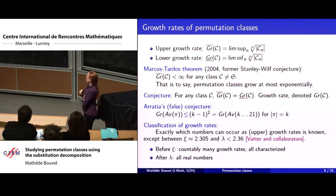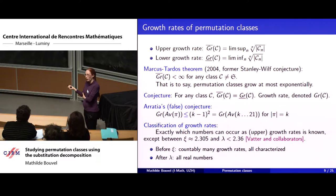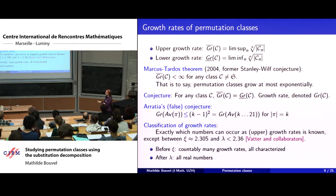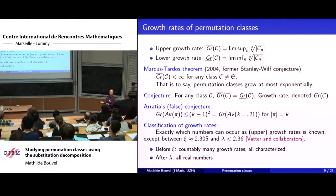One more thing about growth rates: which numbers can be growth rates of classes? This is not completely known but quite well understood. After a certain large value lambda, every real number is a growth rate of some class. For smaller values, they are well understood up to an algebraic number characterized by an explicit polynomial of small degree. Before that threshold, there are countably many growth rates and you know how they accumulate — a very nice picture. However, there is a little gap between the two regimes where almost nothing is known.